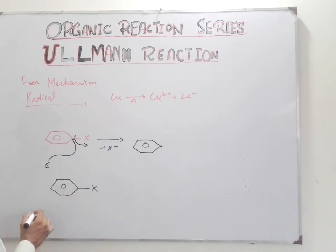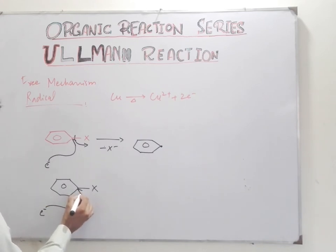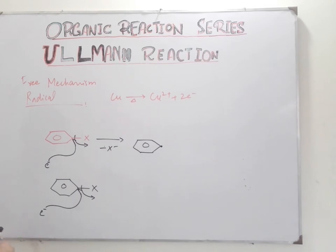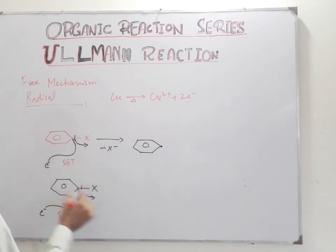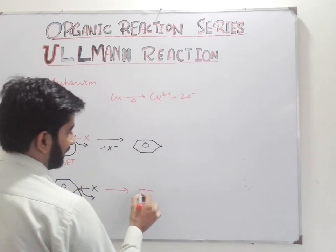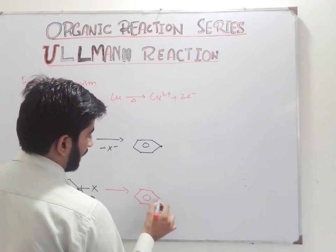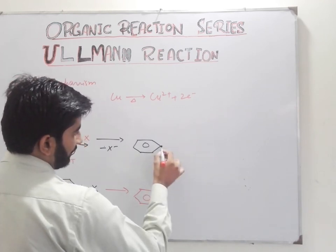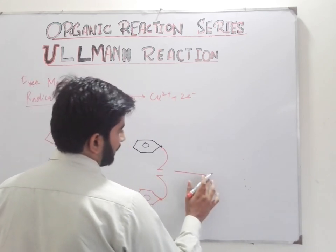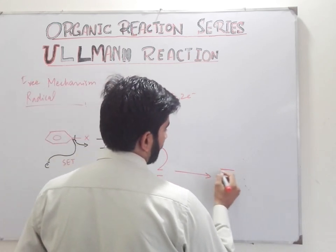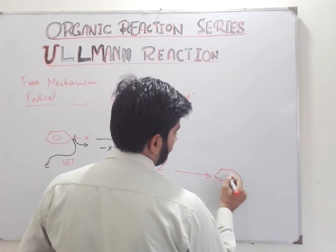For the second aryl halide, a second electron transfer takes place. The halide ion is eliminated, single electron transfer takes place, and there is formation of another aryl free radical. This aryl free radical and the first aryl free radical undergo a dimerization process, resulting in formation of a biphenyl.